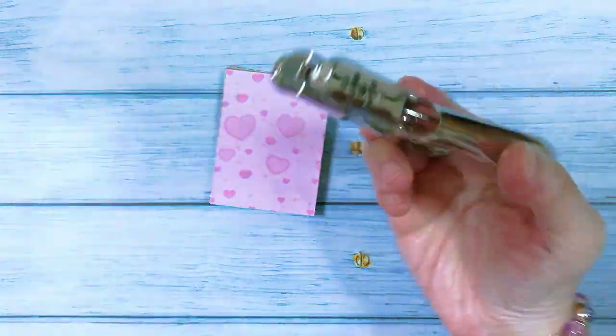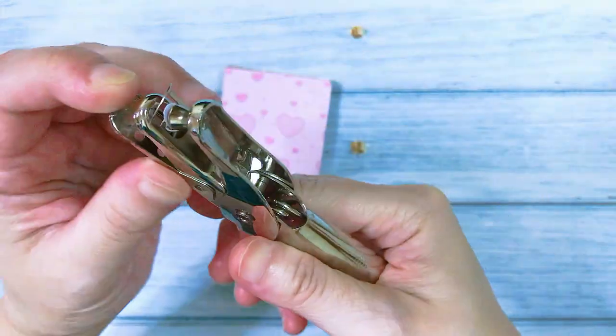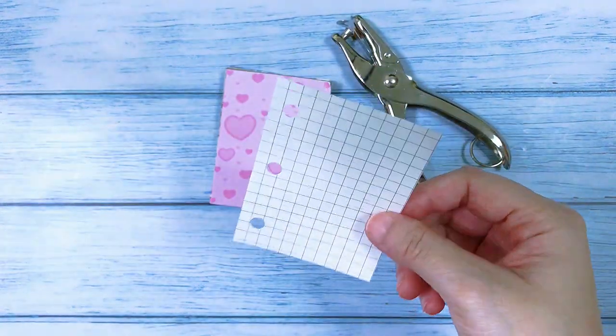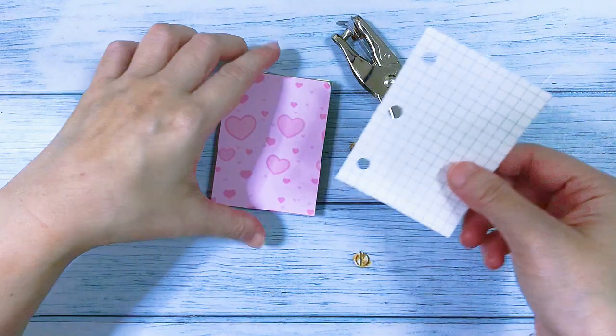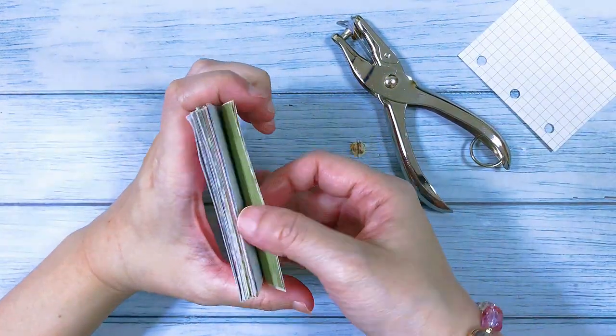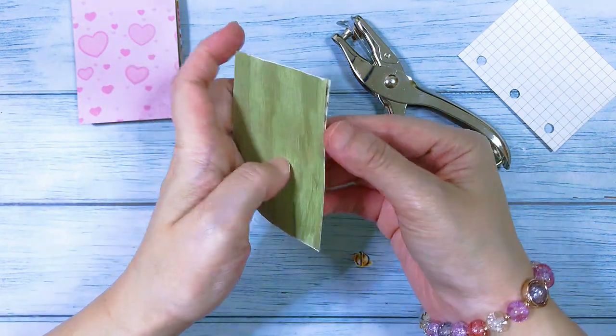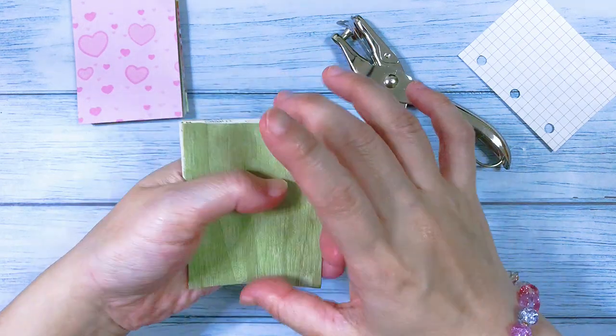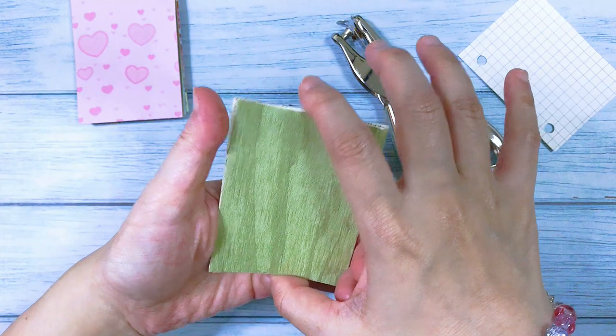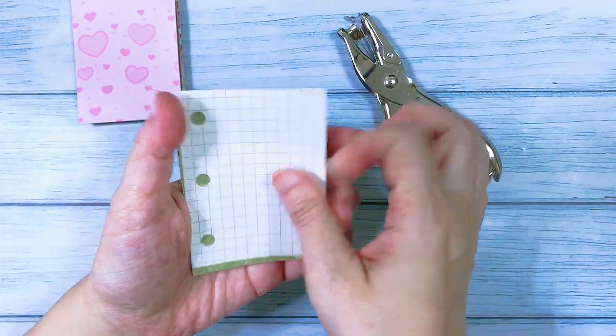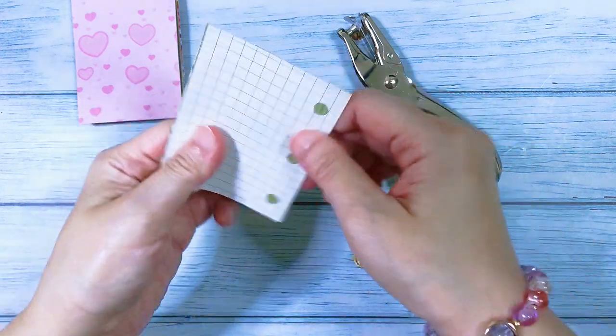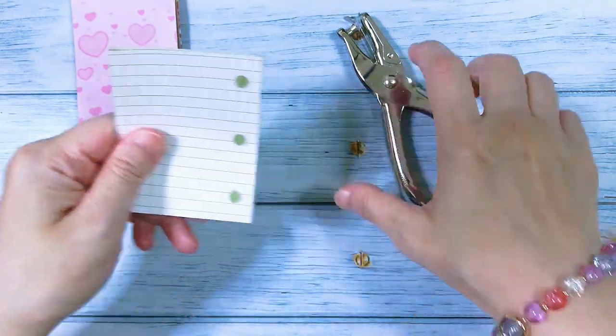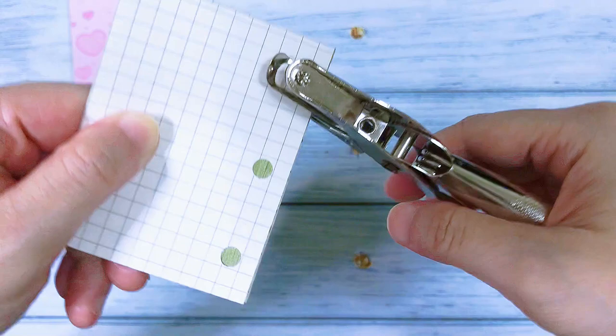Using my single hole puncher here. Taking this earlier sample grid paper. Just taking a small stack first. I'll use the grid paper as a template.